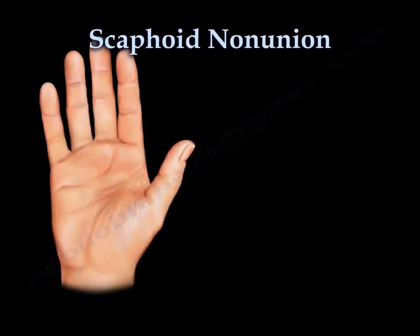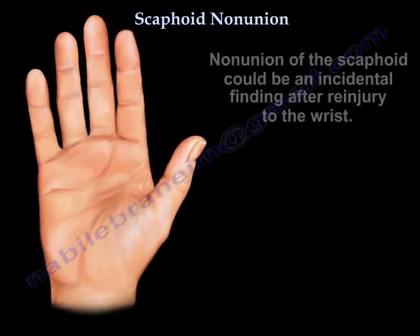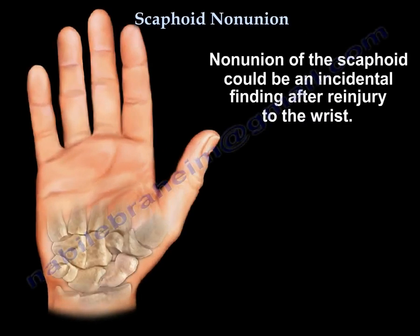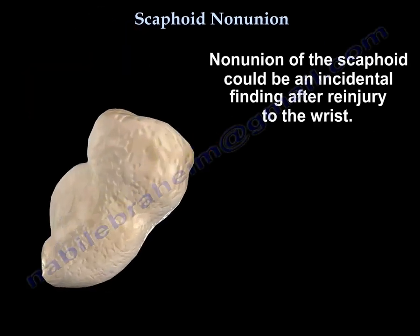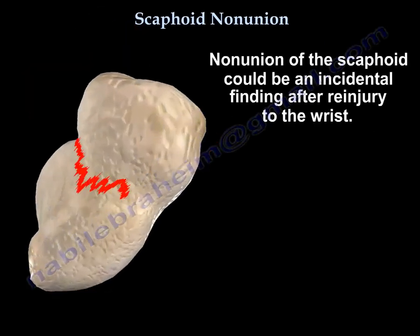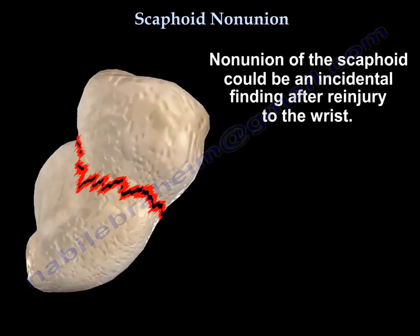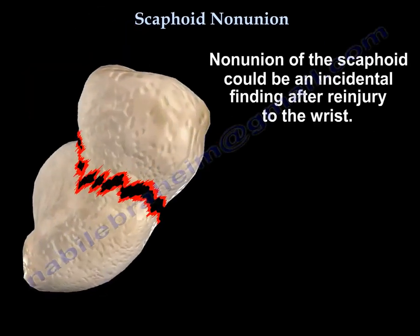Scaphoid non-union. Non-union of the scaphoid can be an incidental finding after re-injury to the wrist.